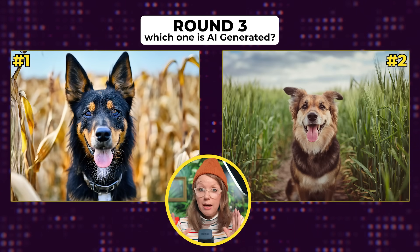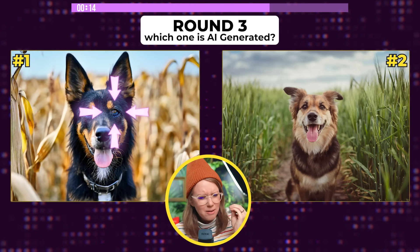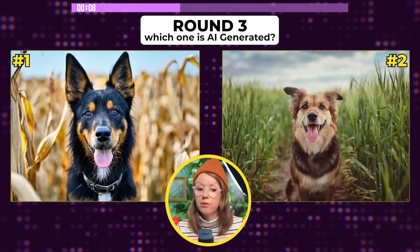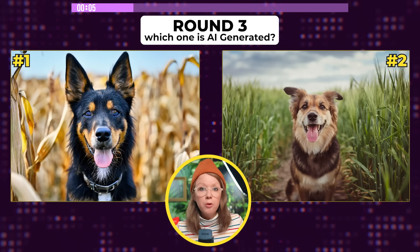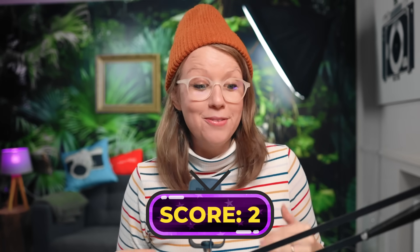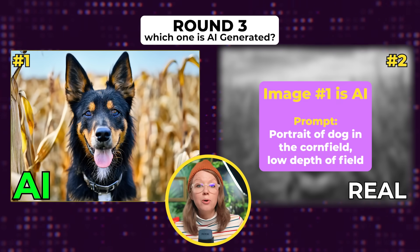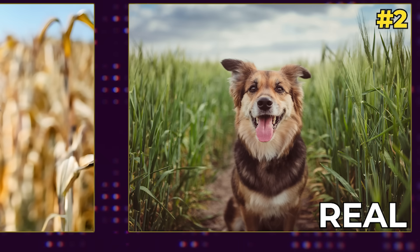We have some doggos. Immediately in the left image, I see that the left eye is throwing me off — there's like a little insect or something, or it could be an AI error. On the right, the grass looks very realistic and the details in both are great. The eye thing could have been something my editor chose specifically to throw me off, but I'm going to go with my gut and say that's an AI issue. Let's see the results — number one is AI generated. I got it right, so now two out of three. The prompt was: portrait of a dog in the cornfield, low depth of field. It did a great job with the depth of field — you can see the blurriness in the background.